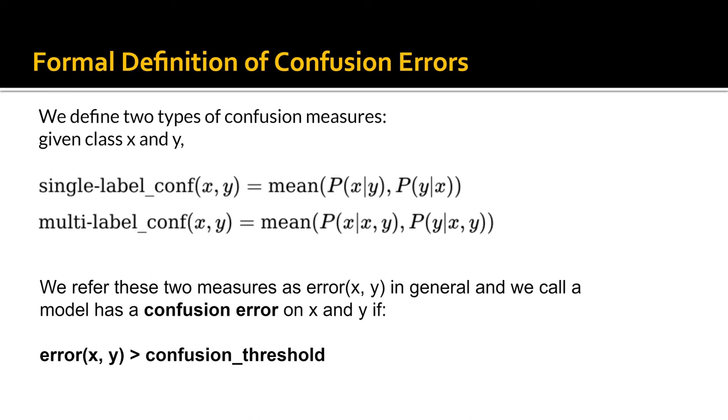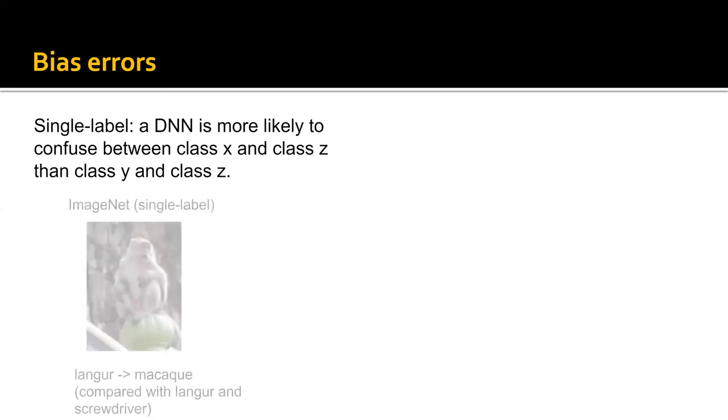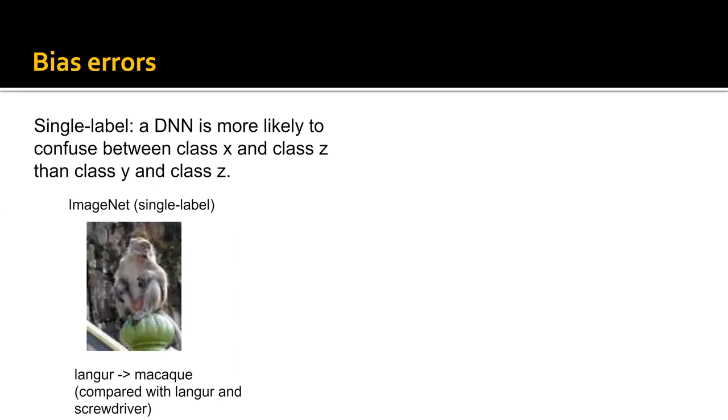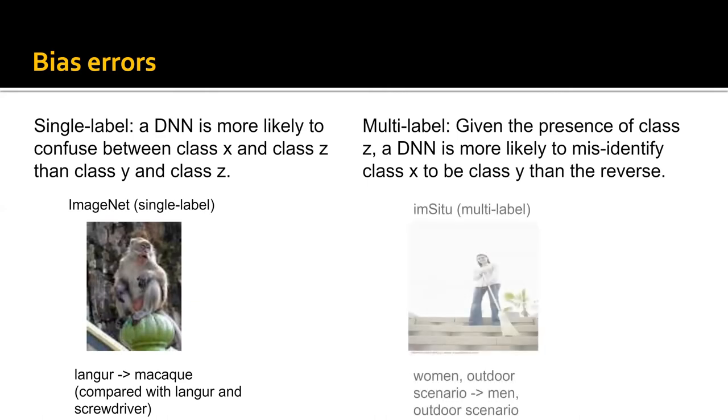The second type of error we study is bias error. For single-label image classification, bias error means a DNN is more likely to confuse between class X and class Z than class Y and class Z. As an example, in this image, a langur is misclassified to be a macaque. Langur is much more likely to be confused with macaque than a screwdriver. For multi-label, given the presence of class Z, a DNN is more likely to misidentify class X to be class Y than the reverse. As shown in this example, given the presence of the outdoor scenario, a woman is more likely to be misclassified than a man.